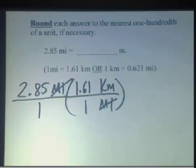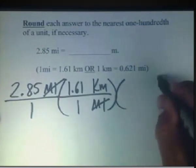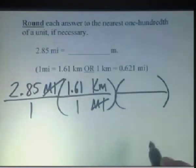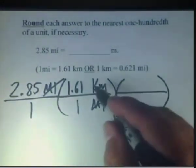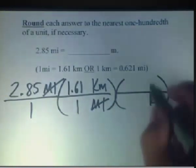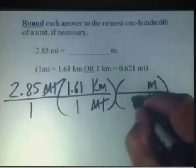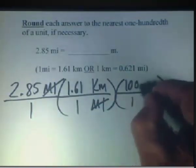But note that for this problem we want to end up with meters. So we have to throw in another unity fraction here. We can say that kilometers, in order for those to cancel, we're going opposite down here in the denominator. We want to end up with meters up here on top. So we can say in one kilometer there are 1,000 meters.